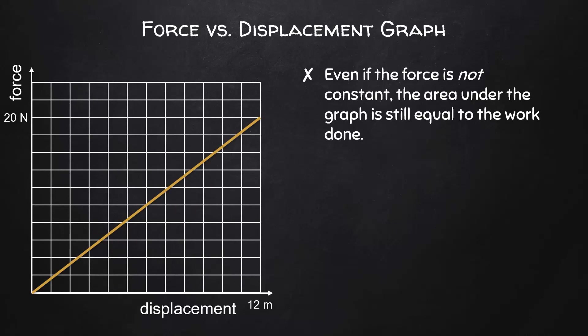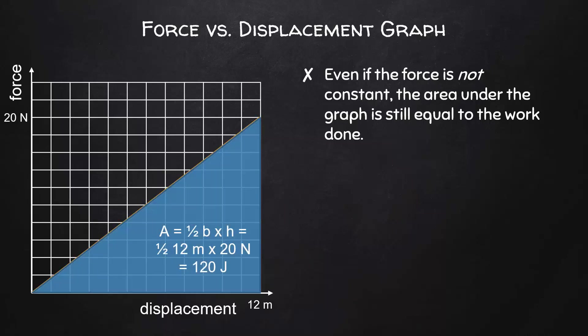This fact is especially useful if we're dealing with a force that is not constant — the area under the graph is still equal to the work done. In this case, the area under the graph is represented by a triangle with an area of one-half base times height. If the force steadily increases from 0 newtons to 20 newtons, all while the object has a displacement of 12 meters, the work done is one-half times the base of 12 meters times height of 20 newtons, giving us 120 joules of work done.